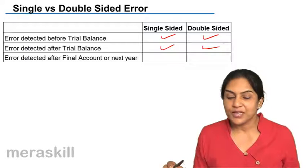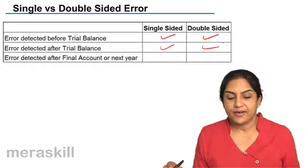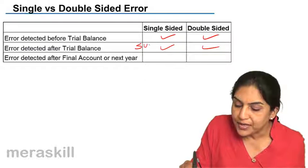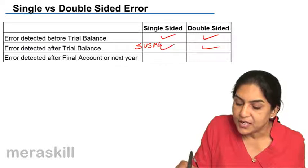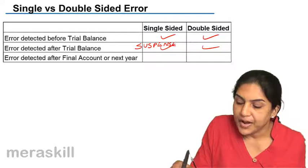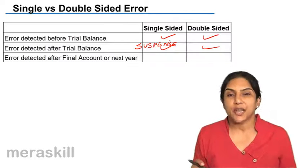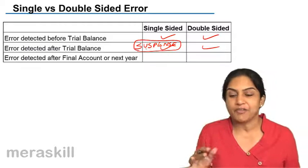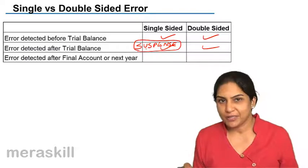The thing is, when it is a single-sided error and it is detected after the trial balance, usually there is a suspense account. If our trial balance has not tallied, the difference in the trial balance is put into a temporary account, an artificial account called the suspense account.